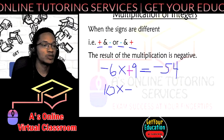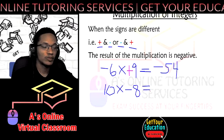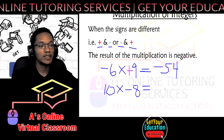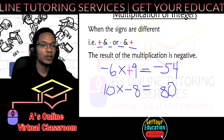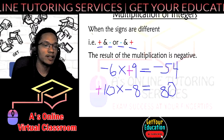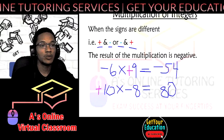And if we had positive 10 multiply by negative 8, 8 by 10 is 80, and because we have one sign that is positive and one sign that is negative, the answer would be negative.